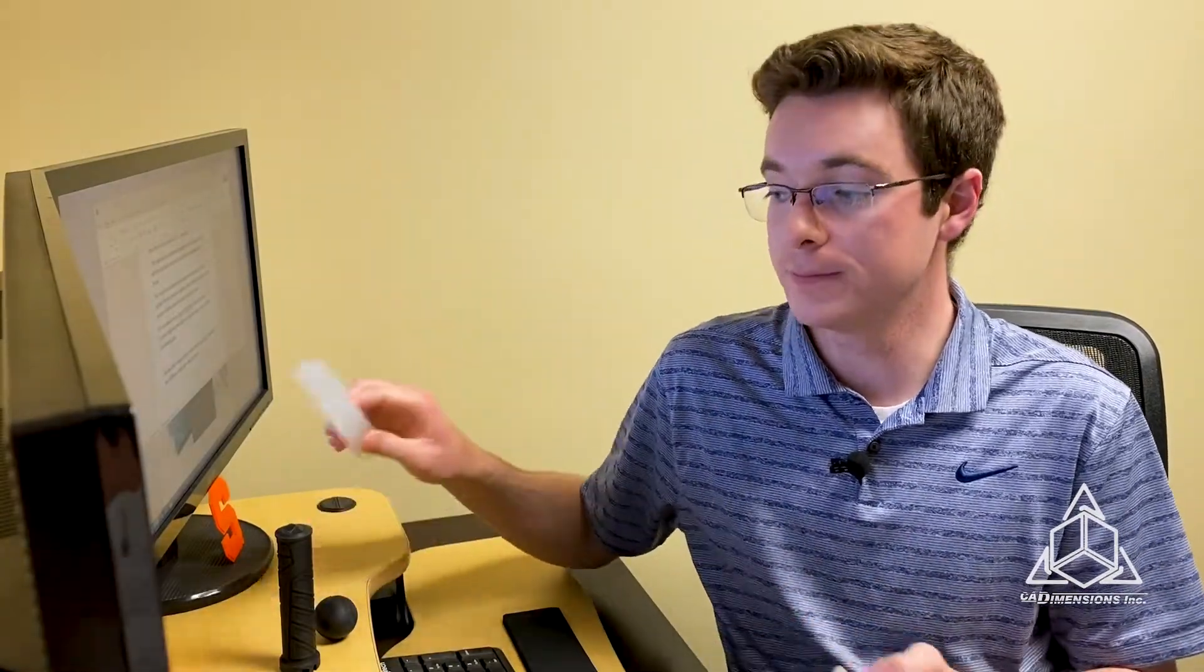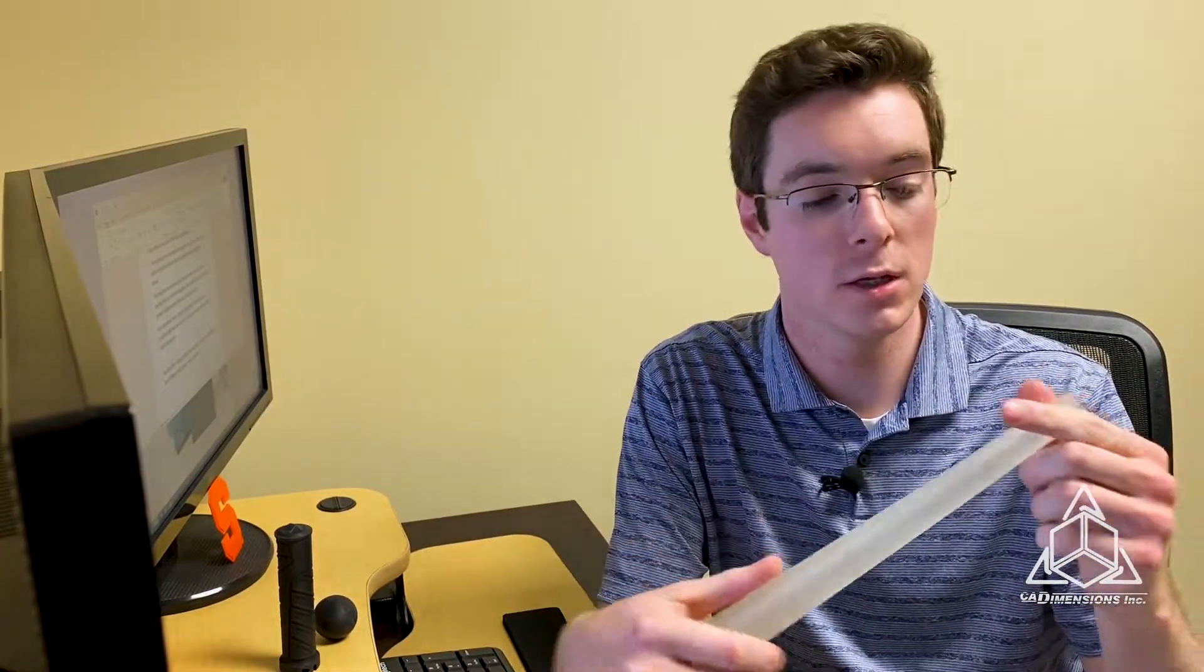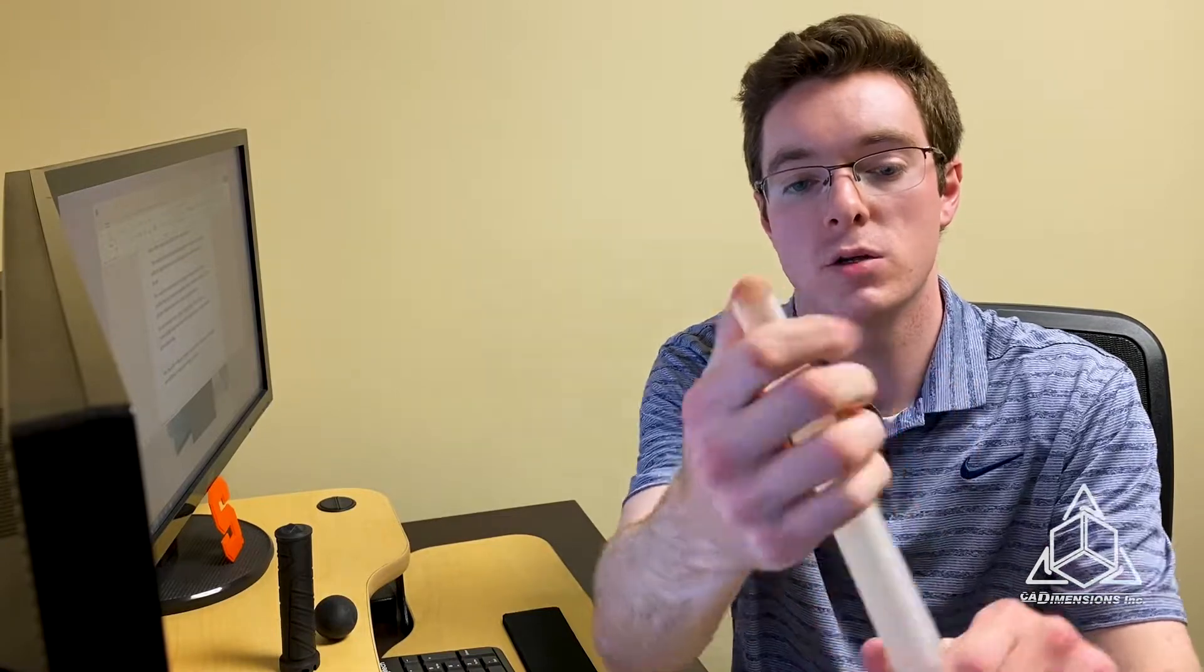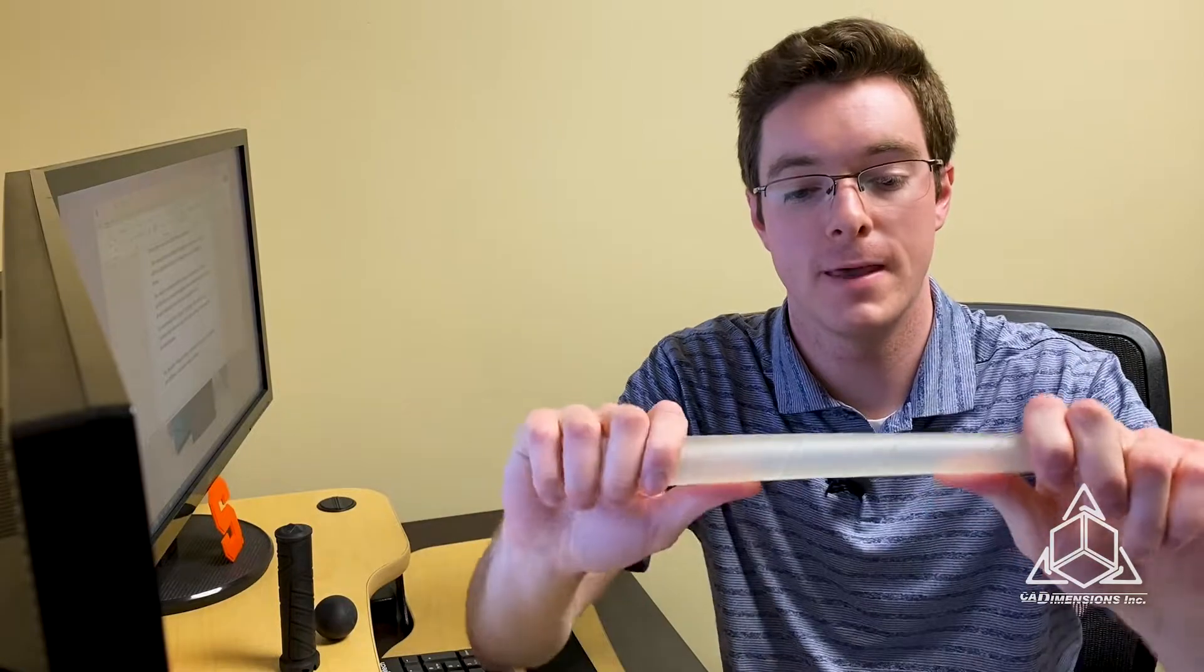So I have a couple parts here in Quick Gen 500. This is a golf grip. I had intended to print it in 402, but just ran out of material. So I figured, hey, let's try it in Quick Gen 500 and see what we get. You can tell it does have some flexibility to it, but it still is quite stiff. I can't really bend this that much.